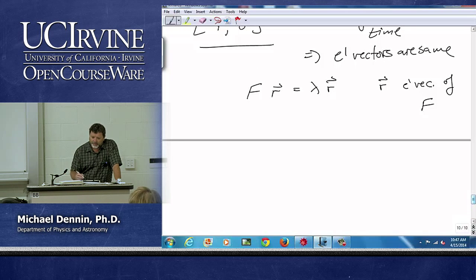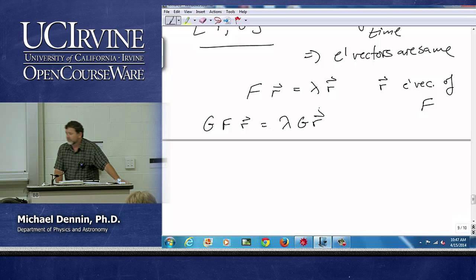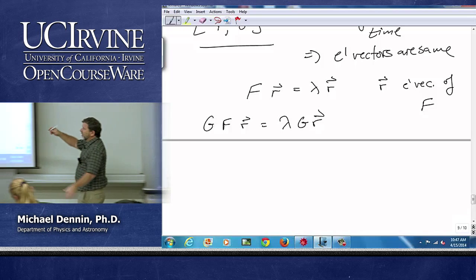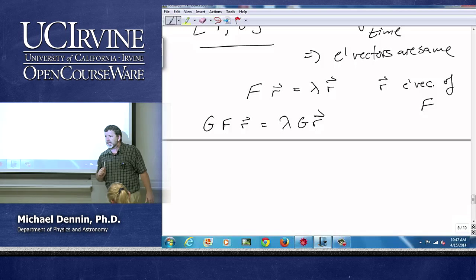Now I can consider the operation g acting on f r, which will also equal lambda g acting on r because lambda is just a number. I can move g through the lambda. That's easy to do.